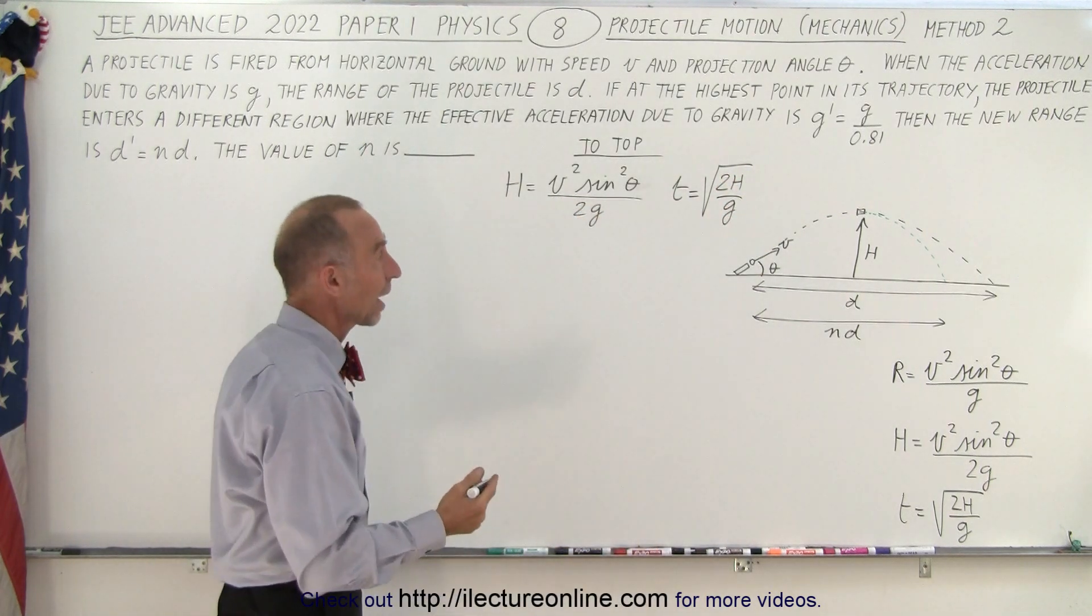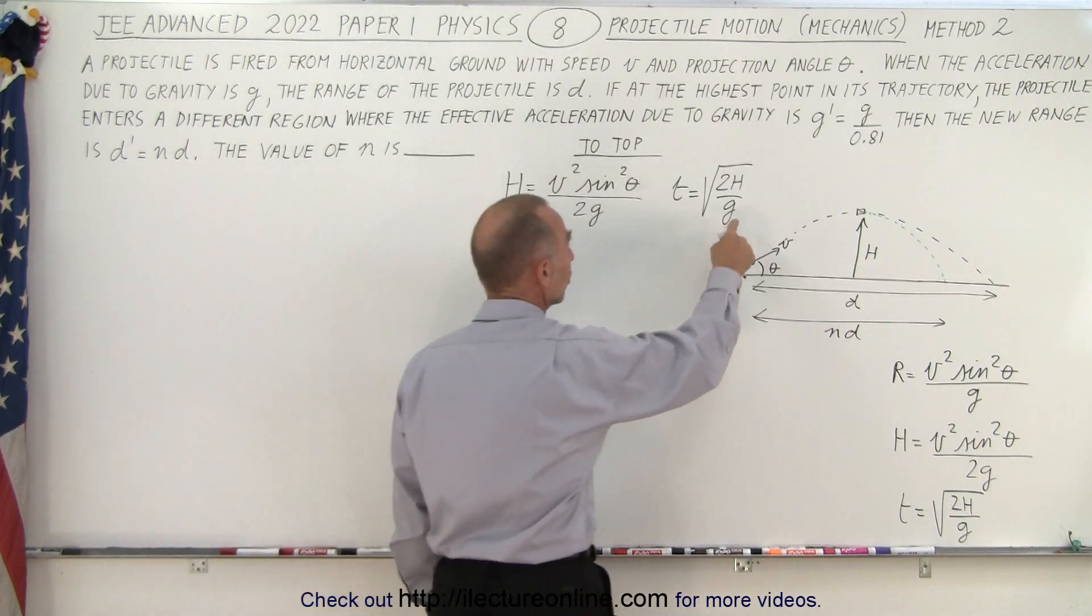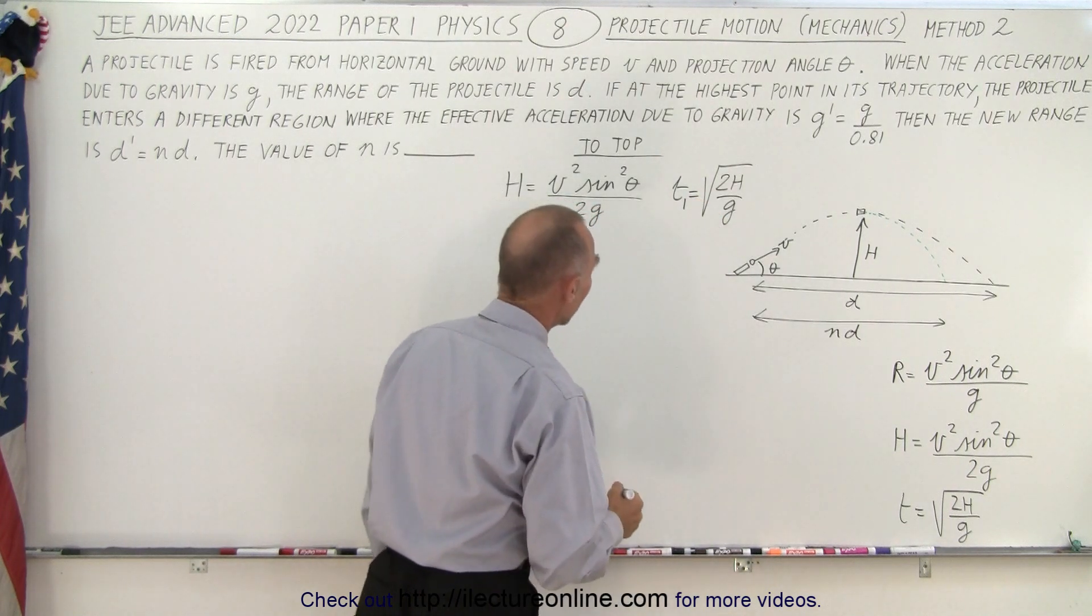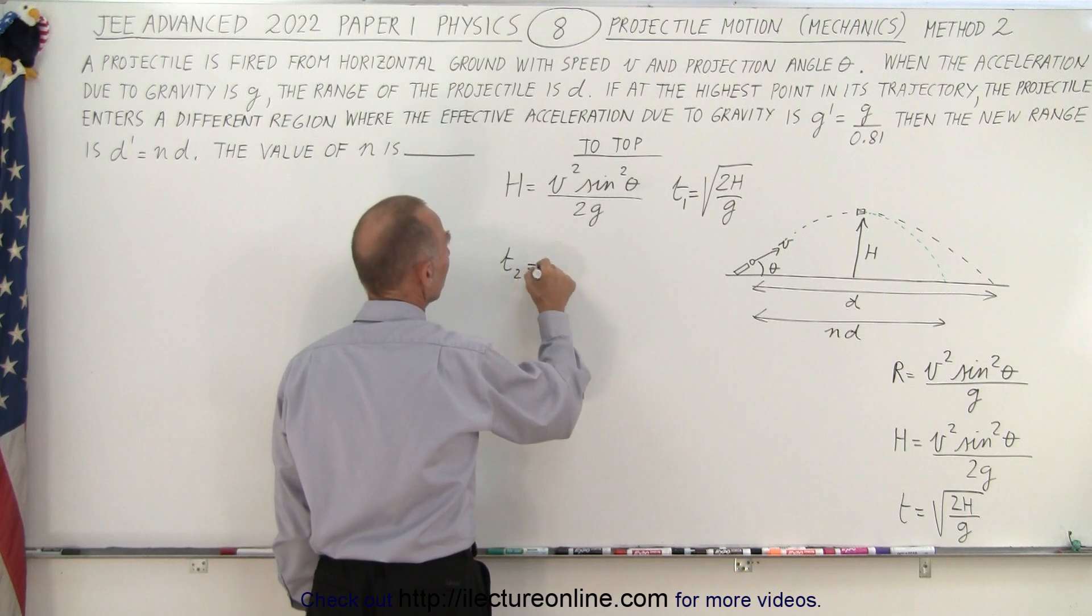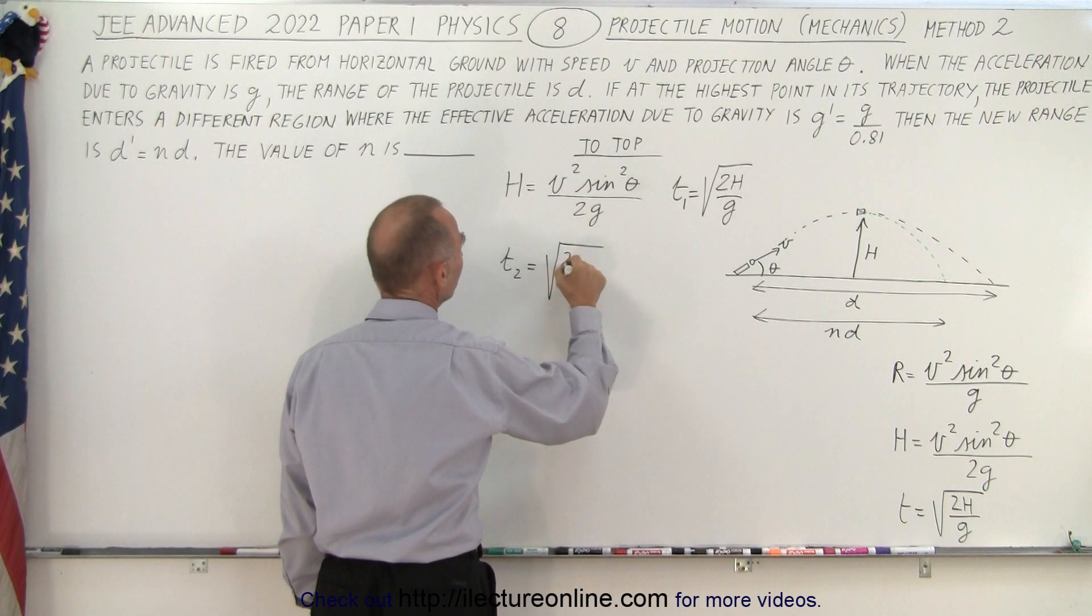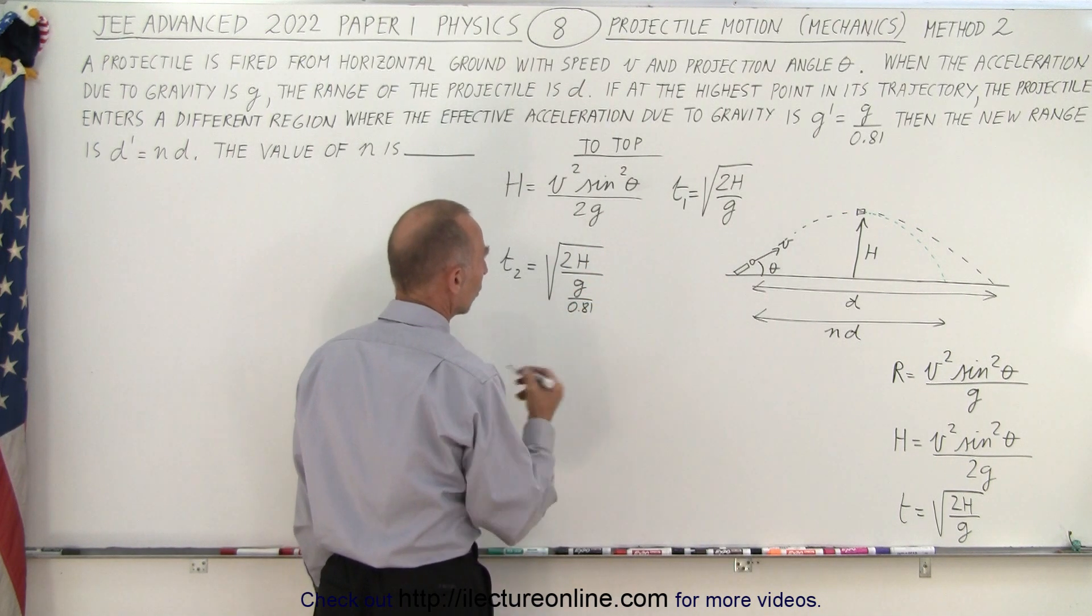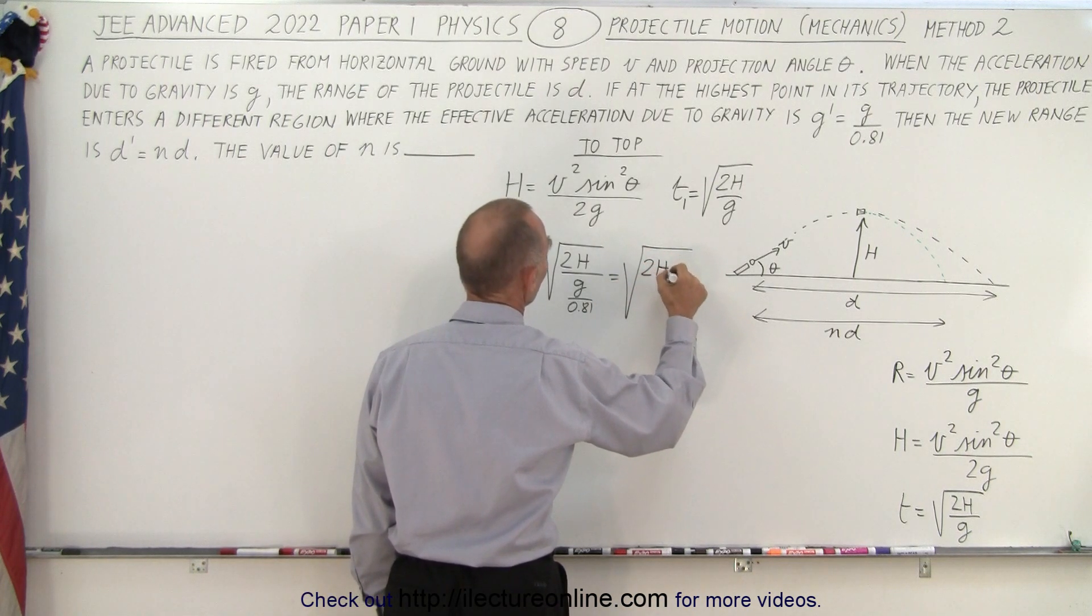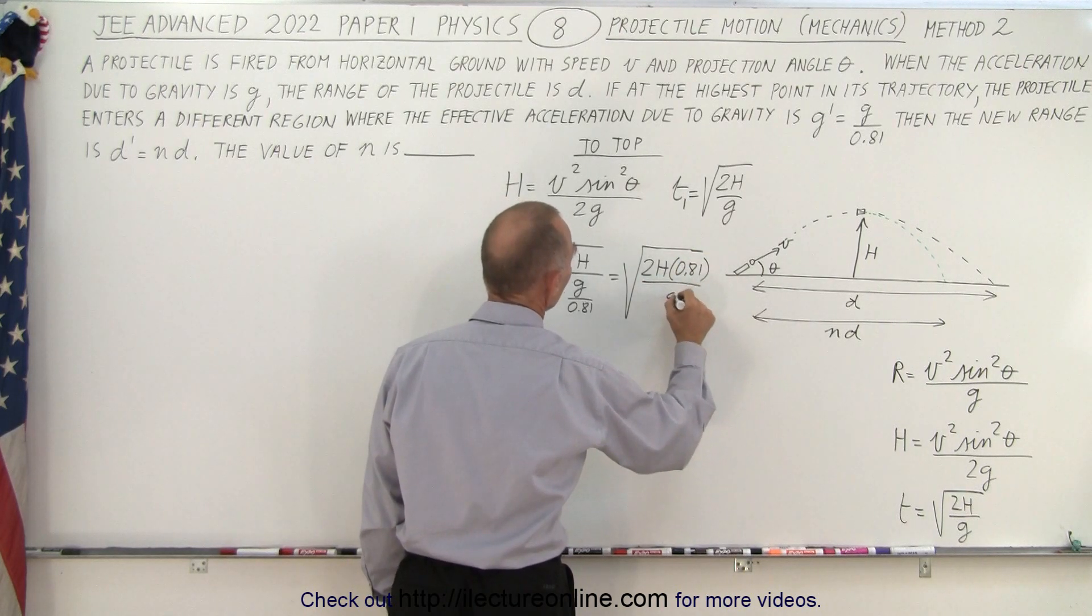Now once we reach that top, now how long will it take to come back down? Of course it will take less time to come back down because g will be larger. And so let's call this t1, and now we're going to find t2. So t2 is going to be equal to the square root of 2h divided by g divided by 0.81, which can be written as the square root of 2h times 0.81 divided by g.